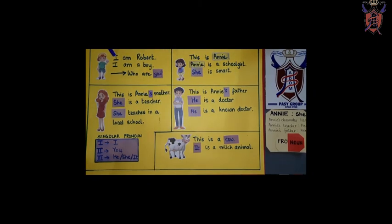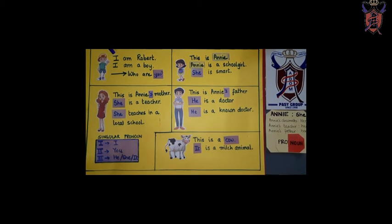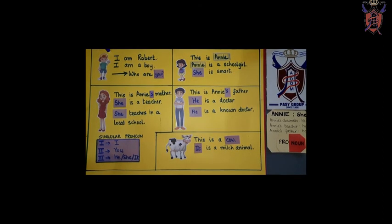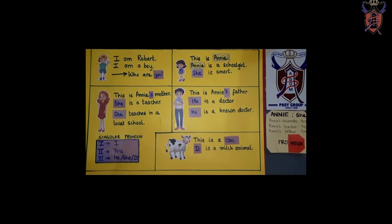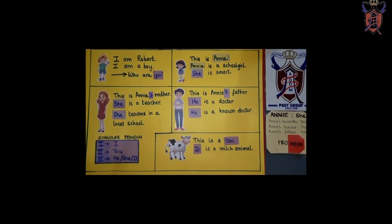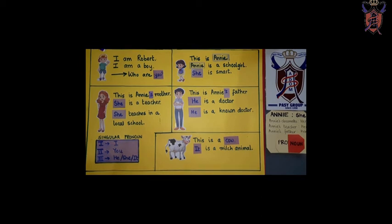So, sab se pahla first person korn hai? Sab se pahla me? I. So, first pronoun is I. Sab se pahla pronoun korn hai? I. Remember, hum ne Robert se shurru kiya thar. Robert ne bola I am a boy. Jiasse aap apna naam lete ho. I am Shriyanshi. I am Hardik. Sab se pahla first person korn hai? I.